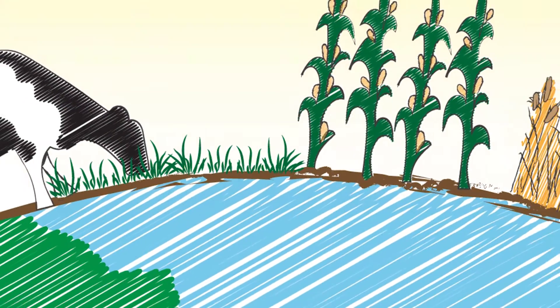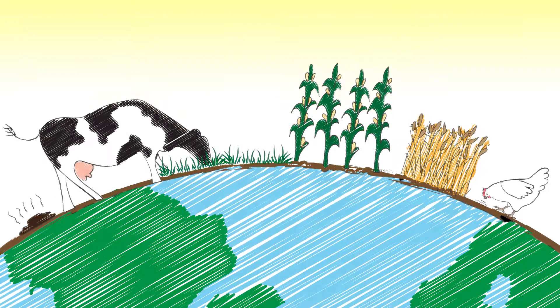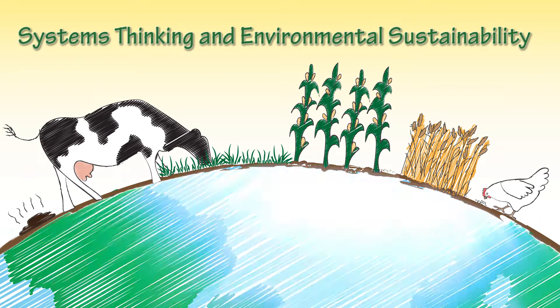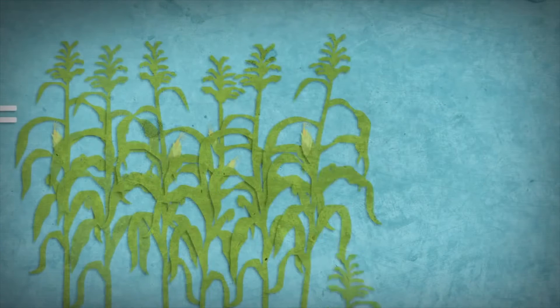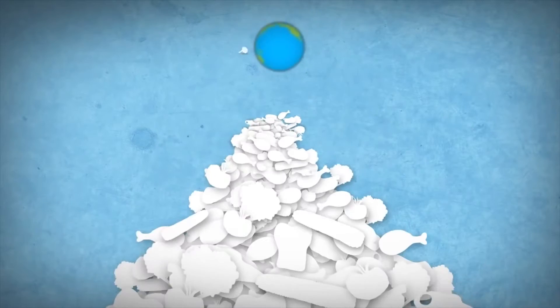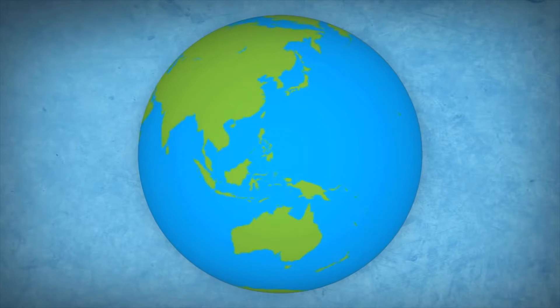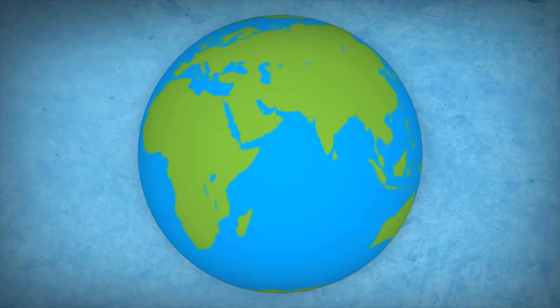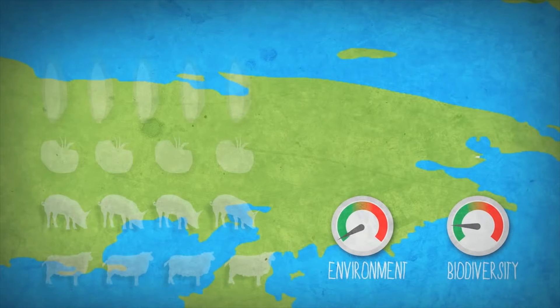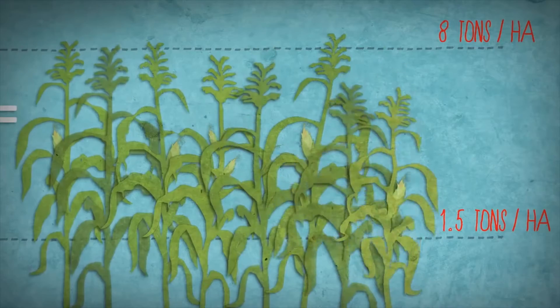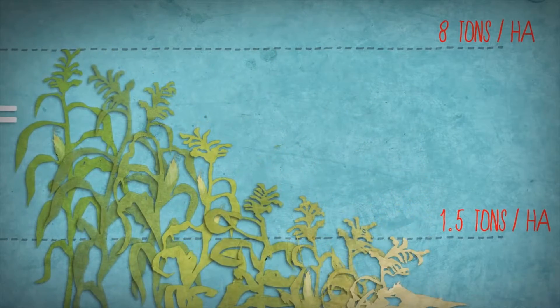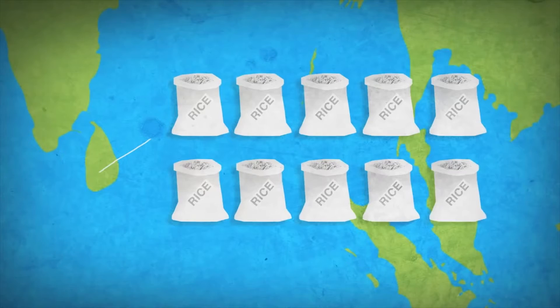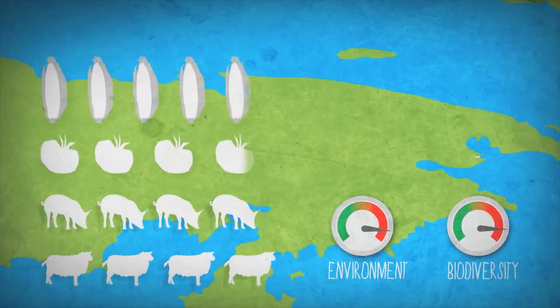How do we feed the world in a sustainable way? Can we produce enough high-quality food for everyone without destroying our planet? If we use high-productivity systems, we can produce a lot of food, but this has a negative impact on the environment. If we use low-productivity systems, the emissions are lower, sometimes soils are degraded, and we cannot produce enough food for everyone. How should we balance this?